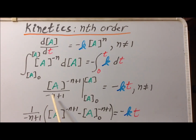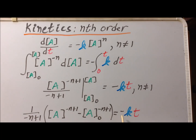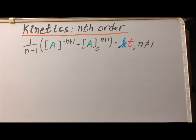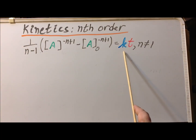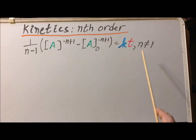So pulling the minus, the 1 over minus n plus 1 factor out in front, we get that the left-hand side becomes 1 over minus n plus 1 times A to the minus n plus 1 power minus A sub 0 to the minus n plus 1 power is equal to minus kt. It would be convenient to get rid of the minus sign on the right-hand side, so we are going to multiply each side by minus 1 and then simplify. After we multiply each side by minus 1, this initial factor now becomes 1 over n minus 1, and the right-hand side becomes positive kt, and recall this is for the case where n is not equal to 1.